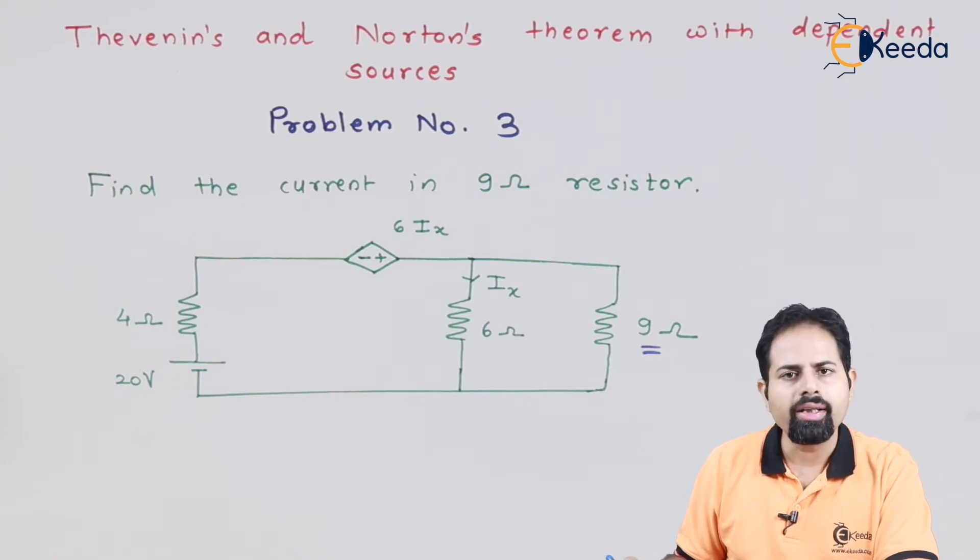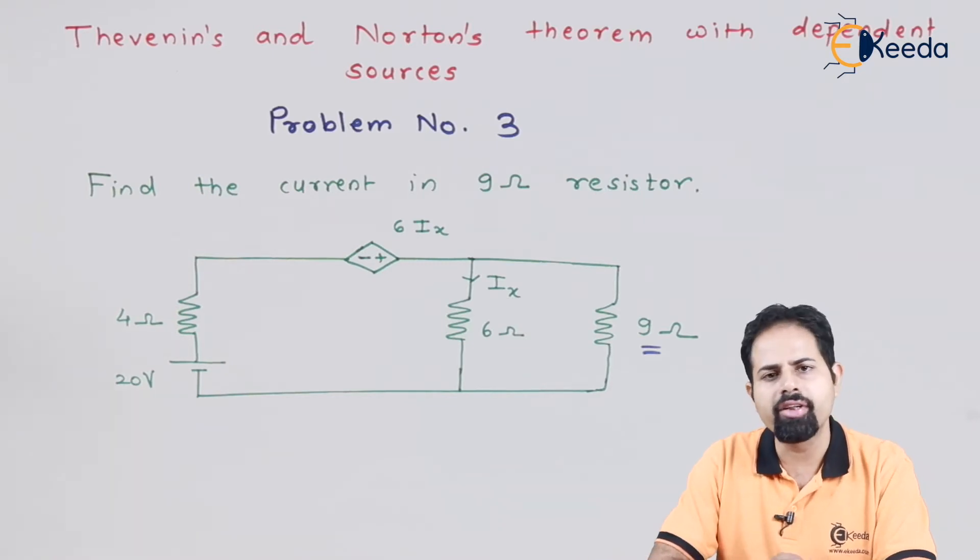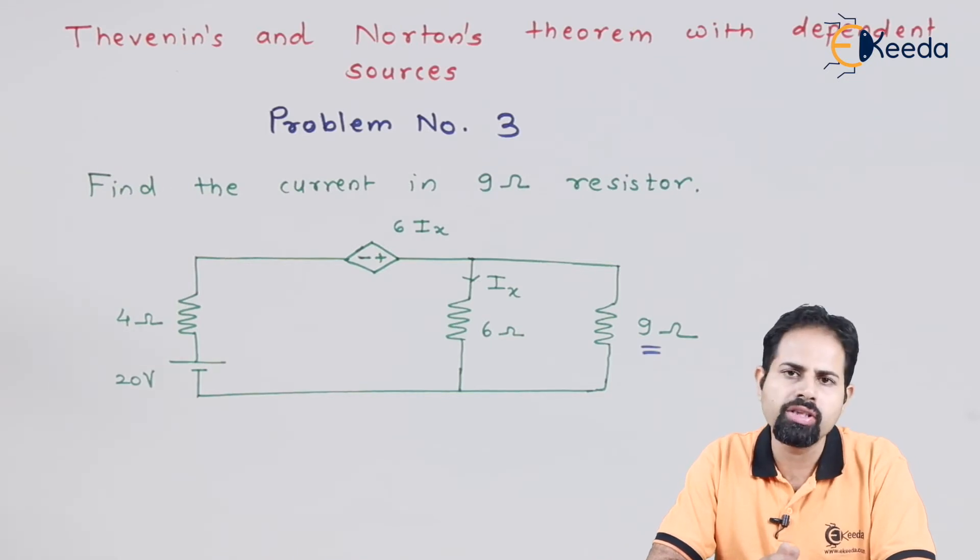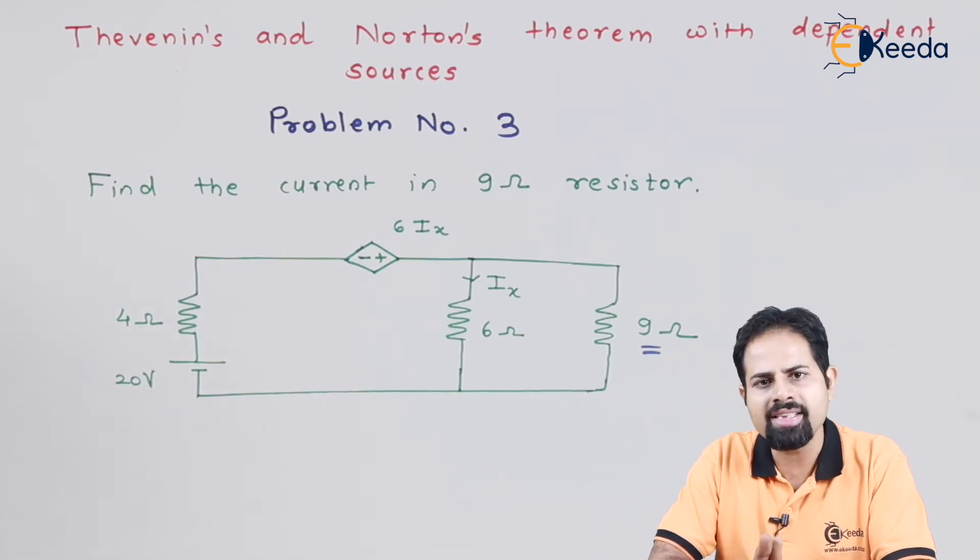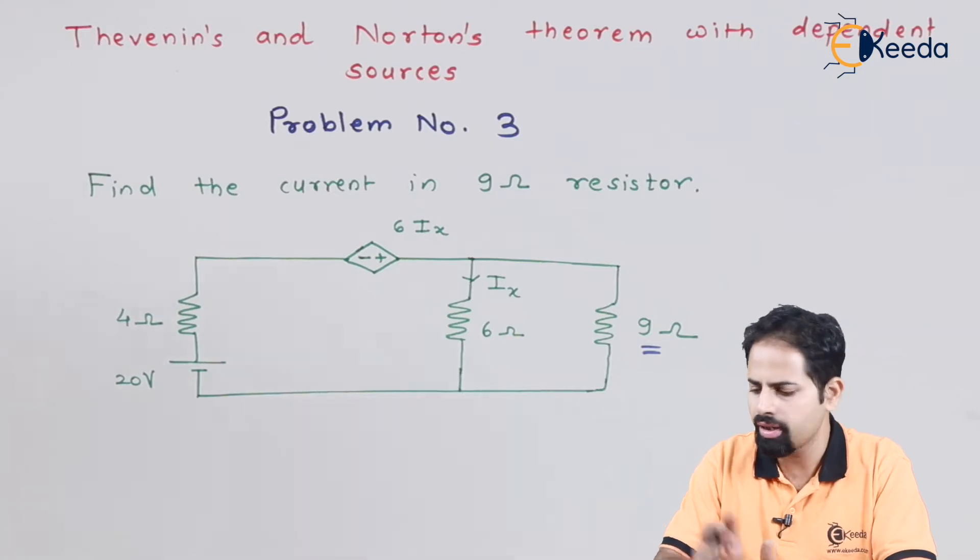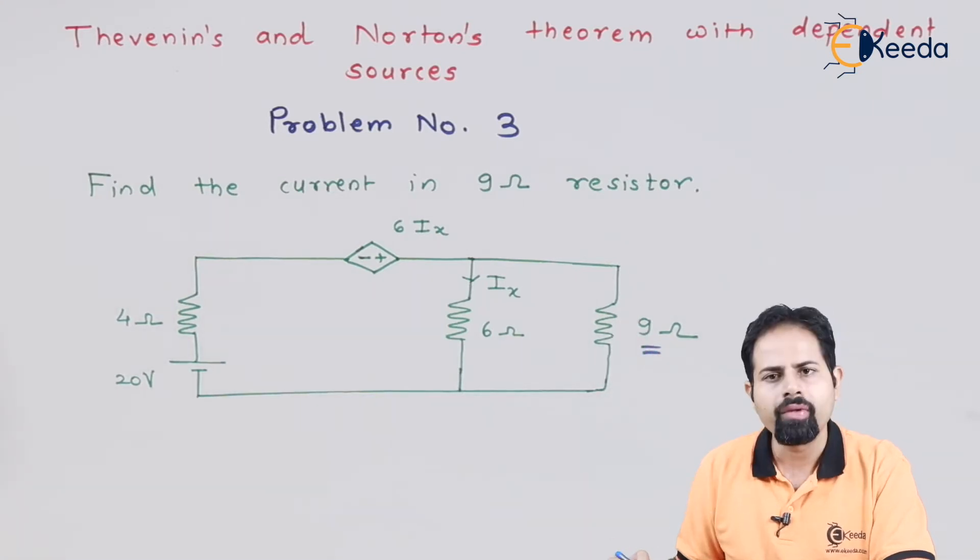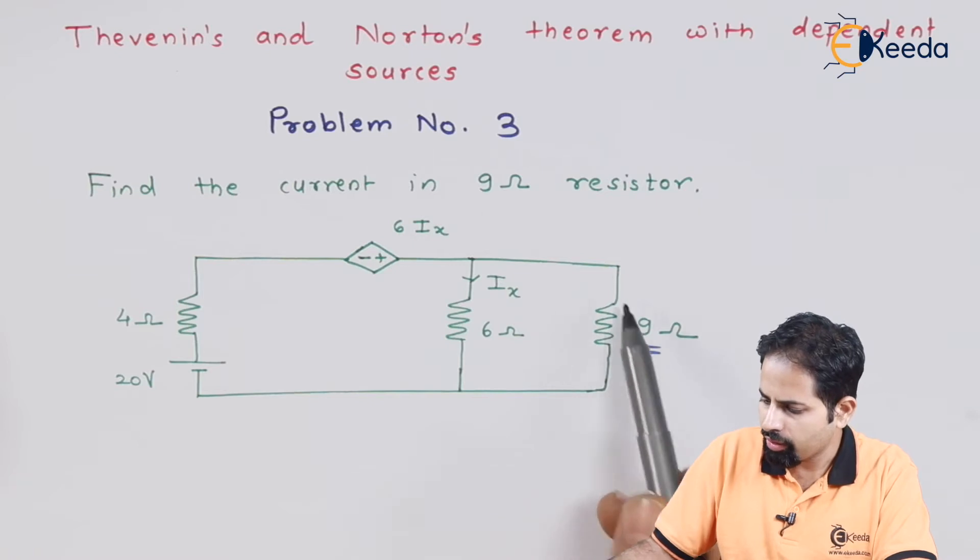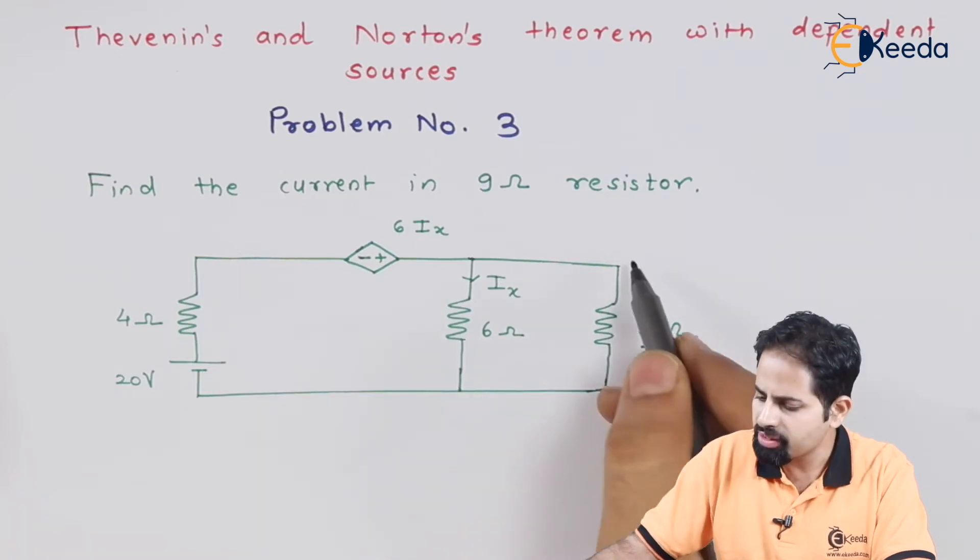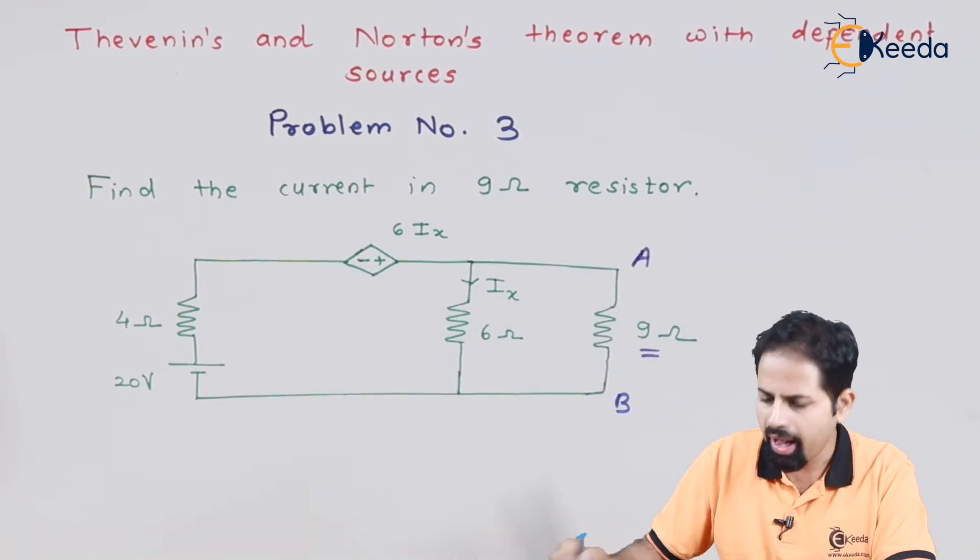So we know that step number 1 is calculation of Vth, that is Thevenin's voltage. Step number 2 is calculation of Isc, that is I short circuit. So first what we will do, for step number 1, we will open this branch and give this name as A and B.